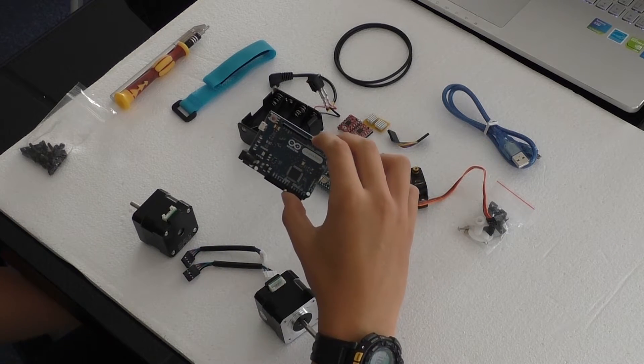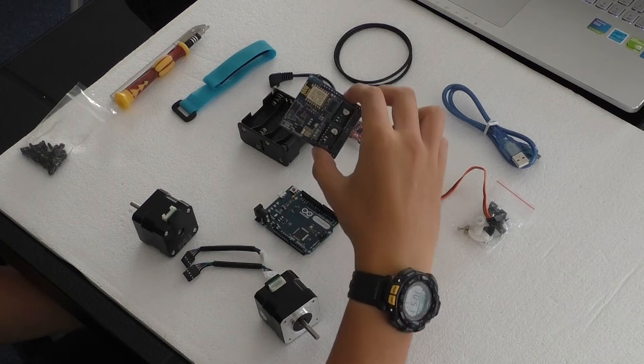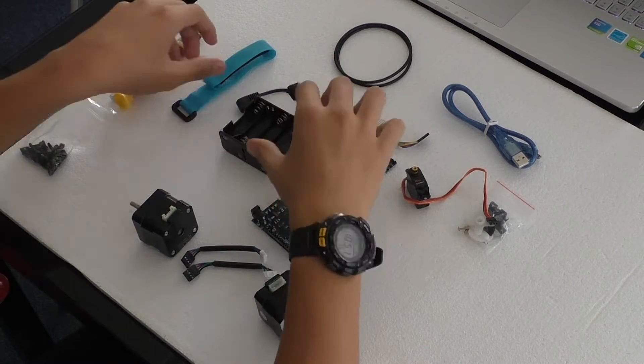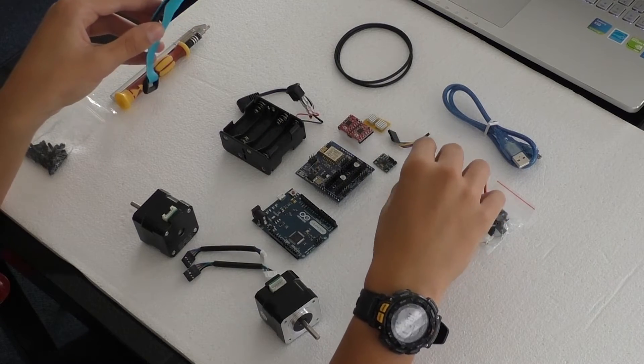This is the Arduino Leonardo. This is the brain. This is the battery box, and the strap that attaches the battery to the brain.